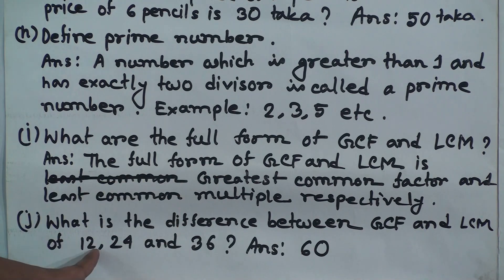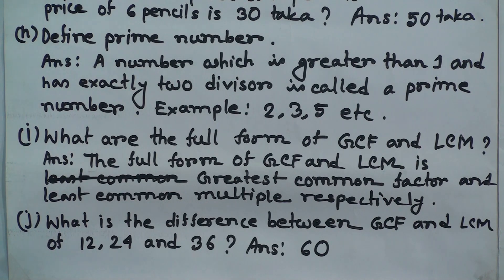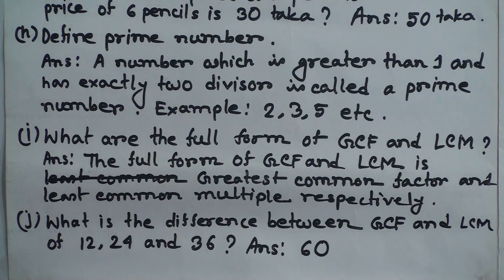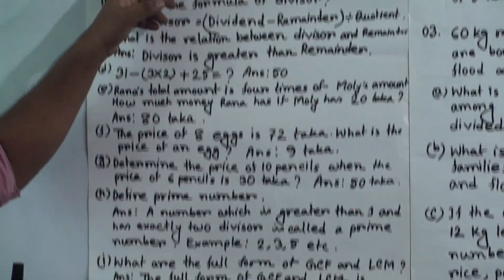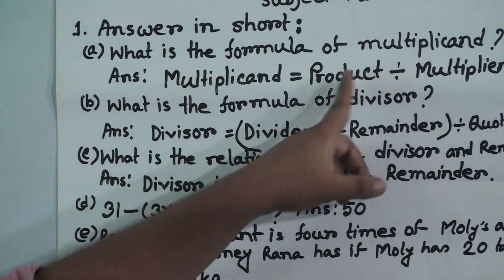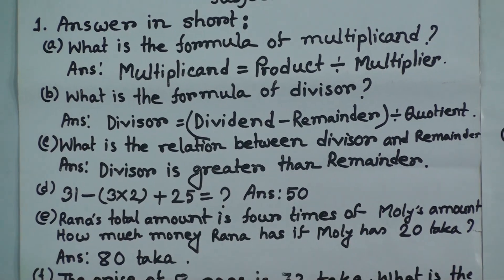(j) What is the difference between the GCF and LCM of 12, 24, and 36? First find the GCF, then find the LCM, and finally subtract. The GCF is 12 and the LCM is 72. Subtracting: 72 − 12 = 60. In your assignment copy, write 'Answer to question number one,' then write each letter (a, b, c...) with only the answer.